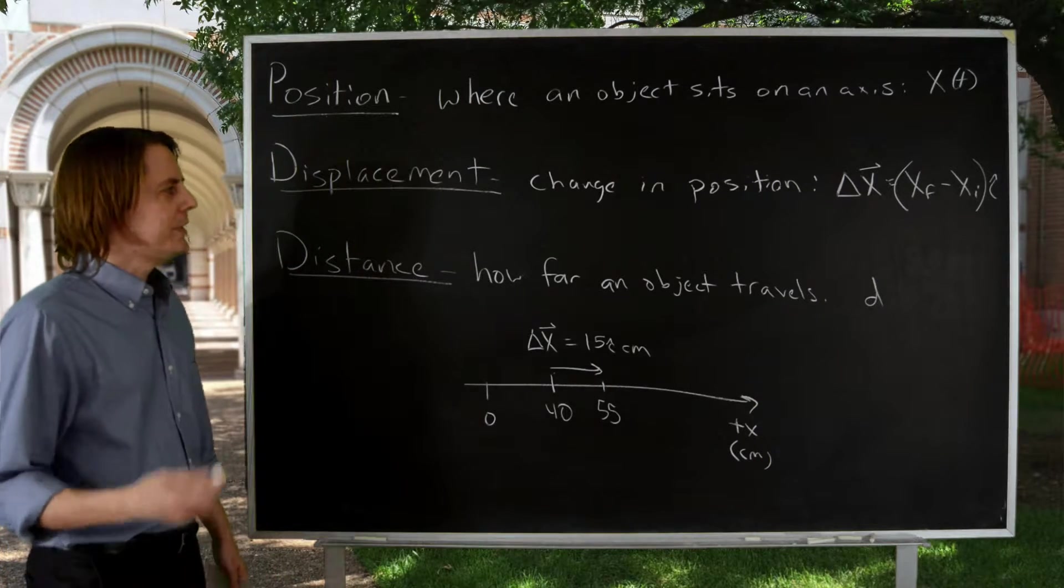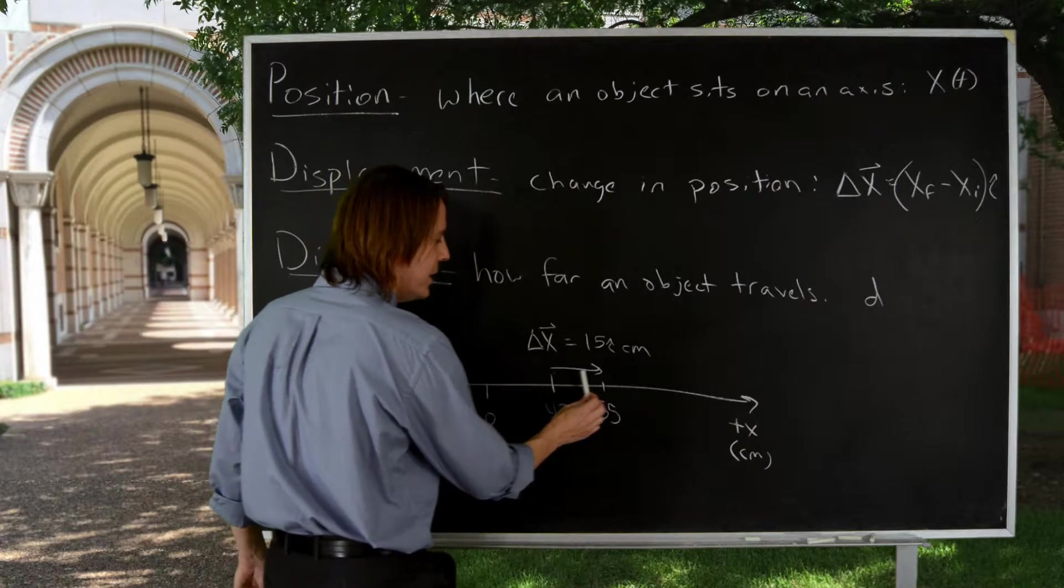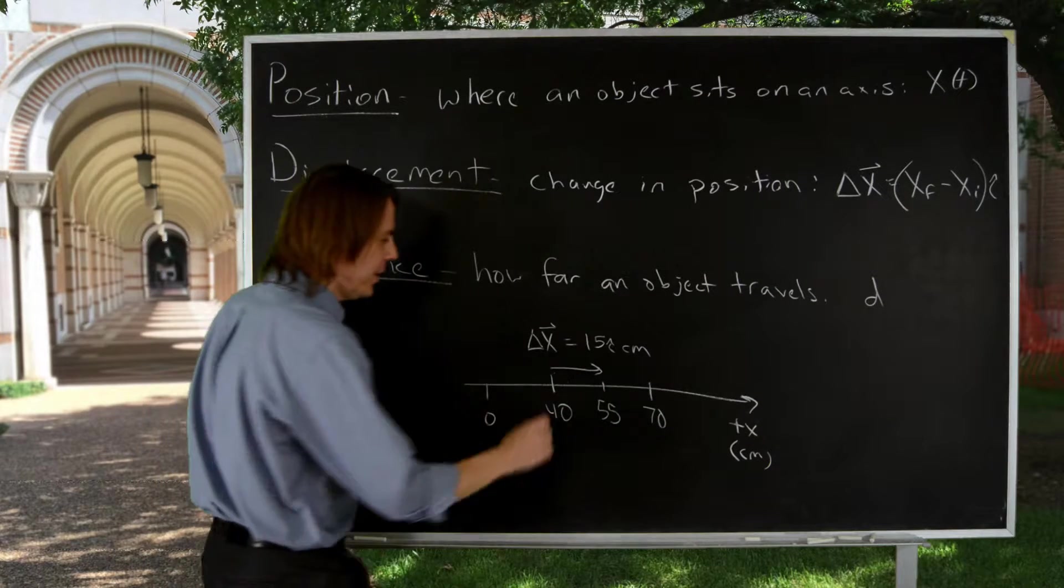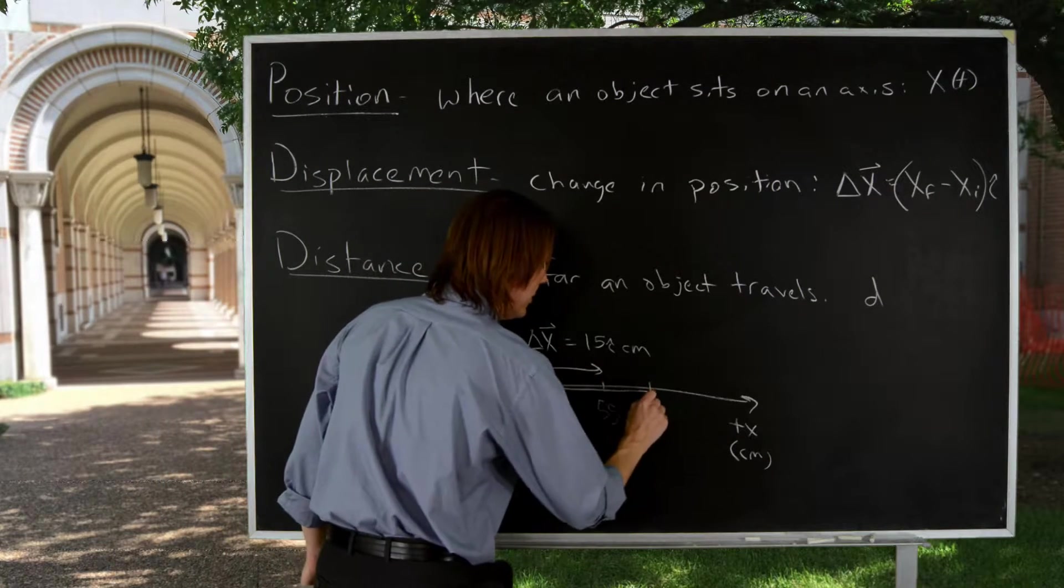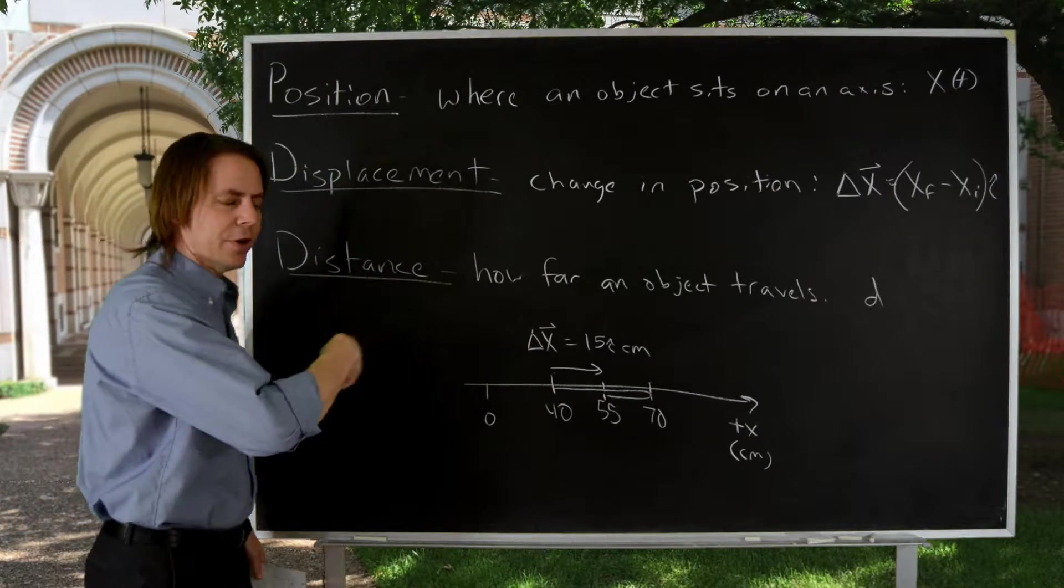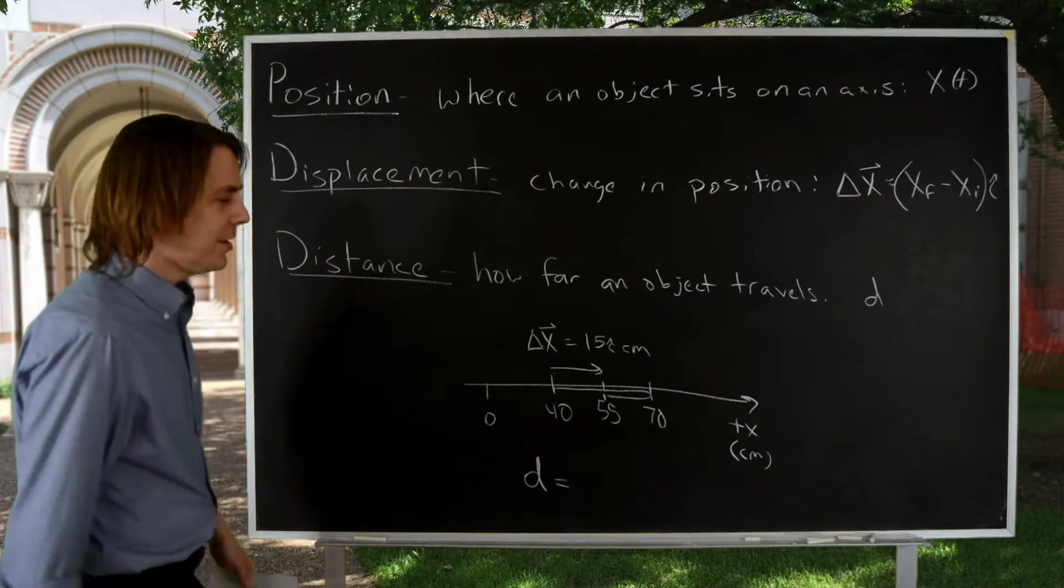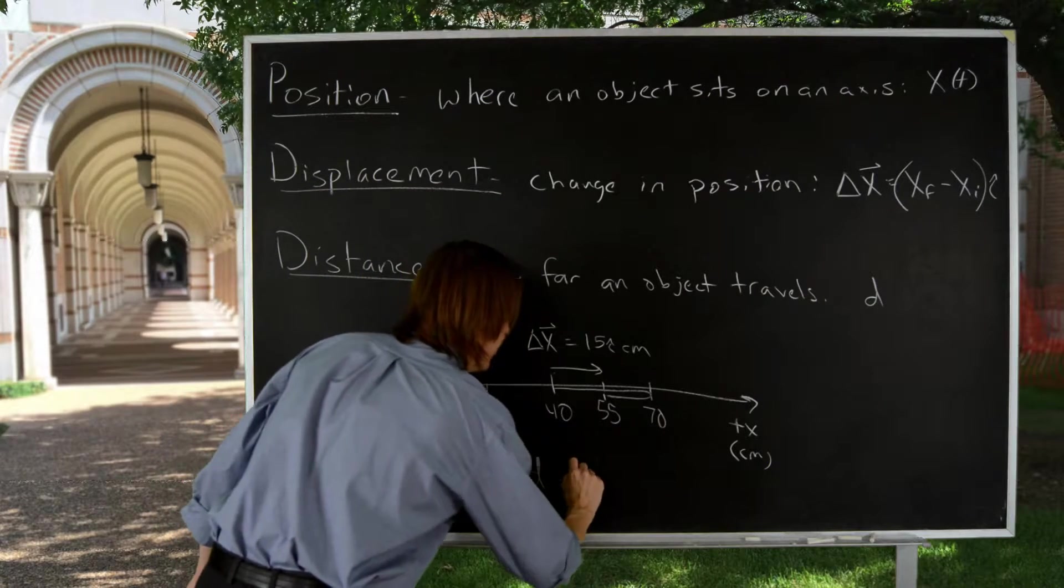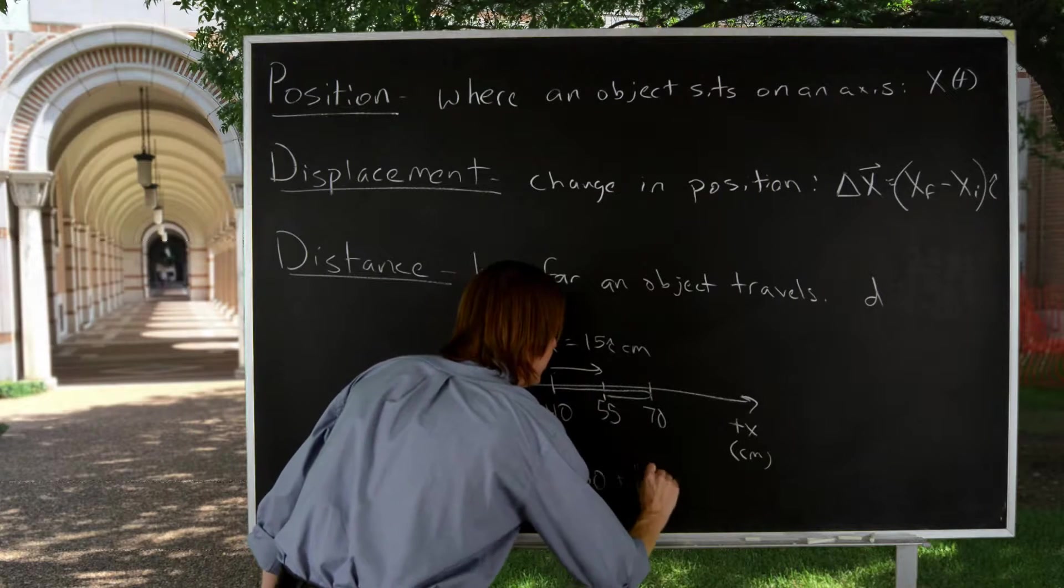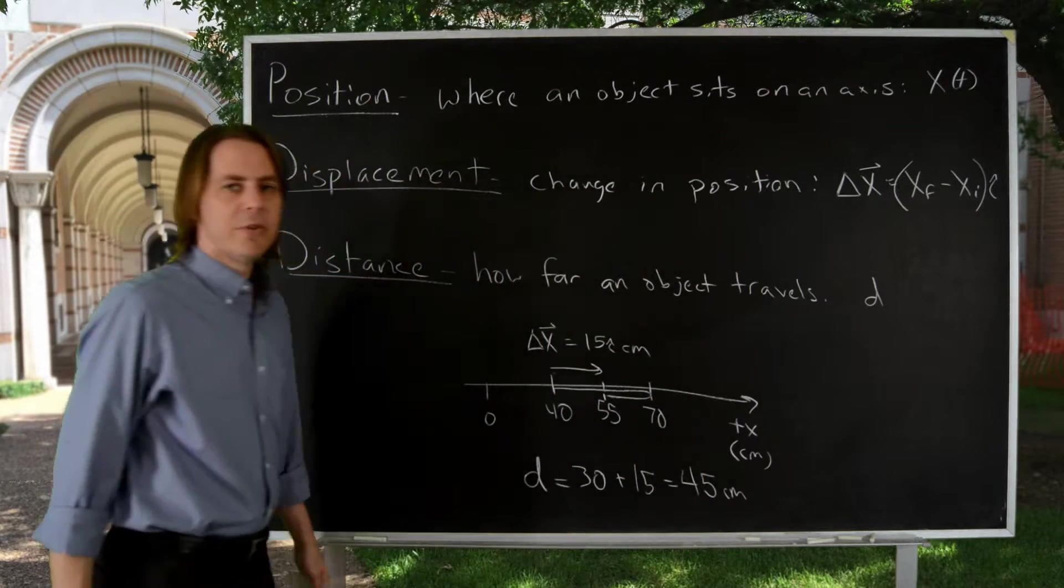The best way to illustrate the difference between distance and displacement is with an example. So let's imagine the chalk starts at 40, goes to 70, and then comes back to 55. So it kind of does a path like this and stops. The distance doesn't care about positive or negative or the direction. The distance just adds up. How far does the chalk feel like it went? So it went from 40 to 70, went 30, and then it went another 15. It went from 70 to 55. So the distance of that path is 45 centimeters.